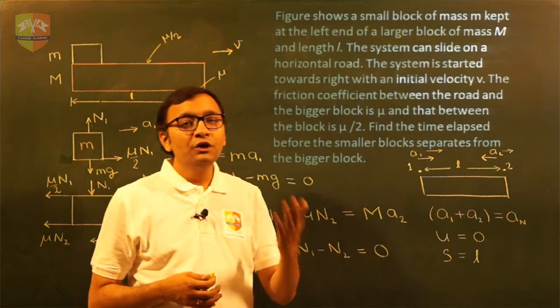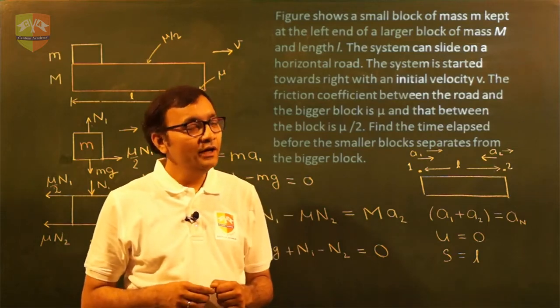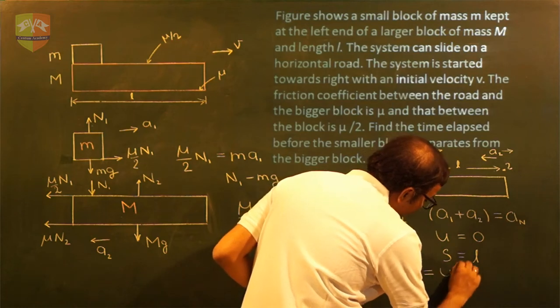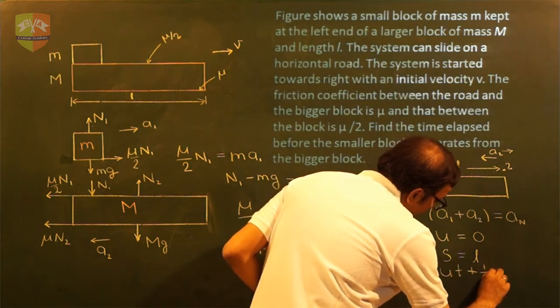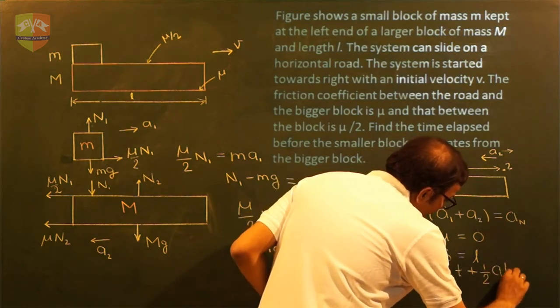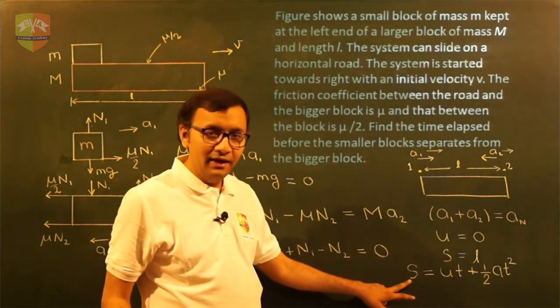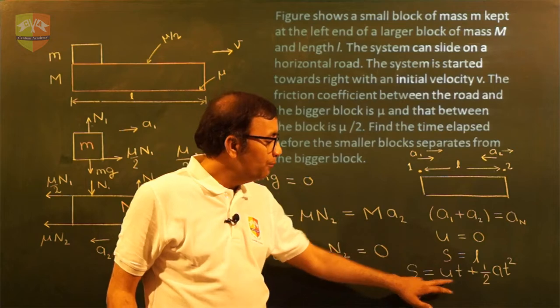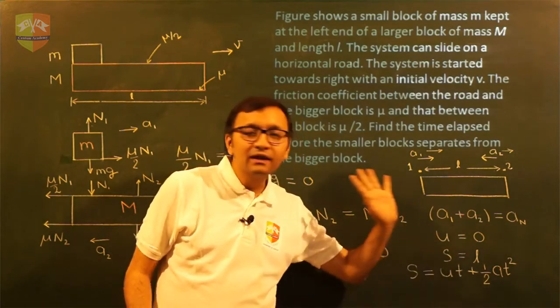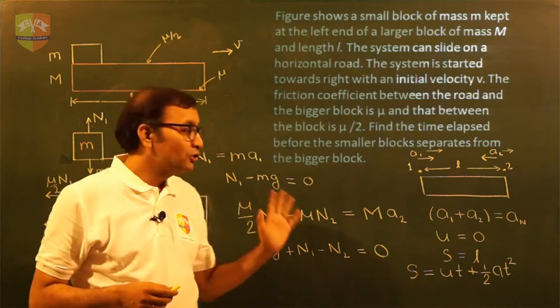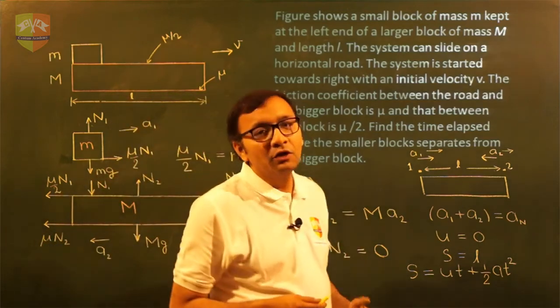So which equation comes in your mind to find the value of time? S equals to U T plus half A T square. So if I use S equal to U T plus half A T square here and I substitute value of S as L, U as zero and A as A1 plus A2, I'll get the value of T. So this is how you solve the particular question.